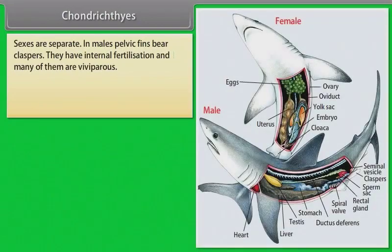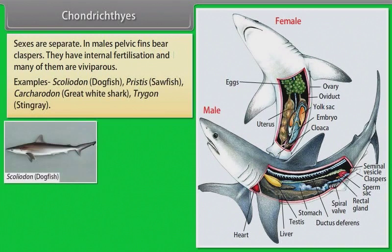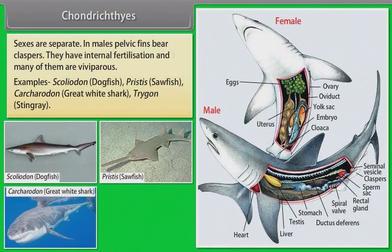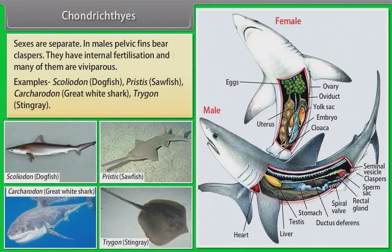Sexes are separate. In males, pelvic fins bear claspers. They have internal fertilization and many of them are viviparous. Examples: Scoliodon (Dogfish), Pristis (Sawfish), Carcharodon (Great White Shark), Trygon (Stingray).